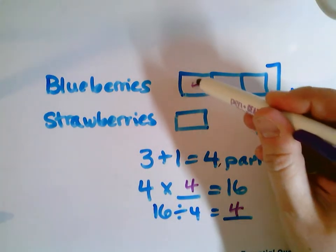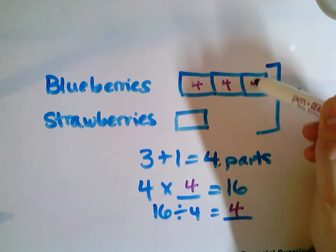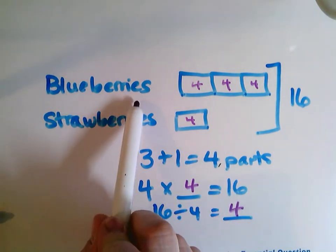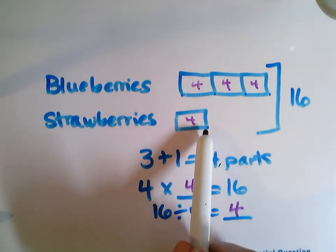So each of these parts is going to get a four. So now I can go back and figure out, well, how many blueberries is this? And how many strawberries is this?